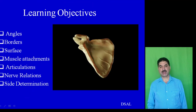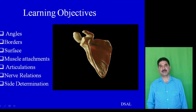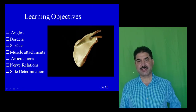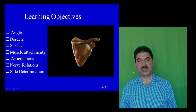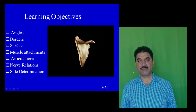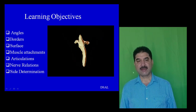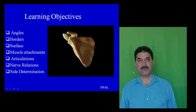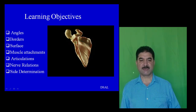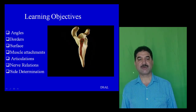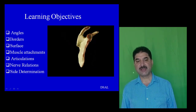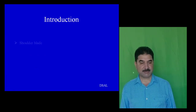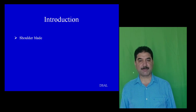Today we are going to talk about scapula. In this session we are going to talk about angles, borders, surfaces of scapula. We will also discuss muscle attachments, articulations, nerve relations and side determination of scapula.